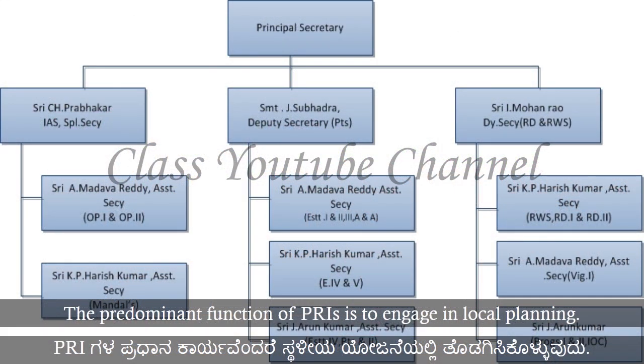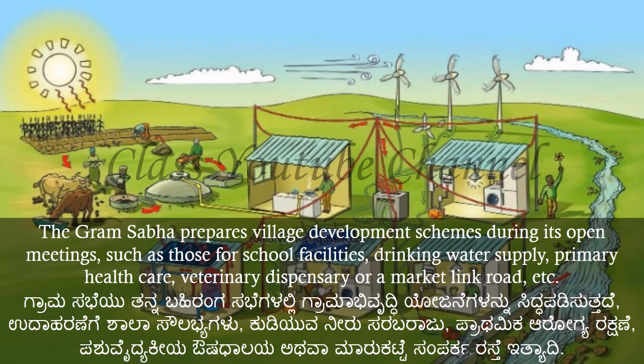The predominant function of PRIs is to engage in local planning. The Gram Sabha prepares village development schemes during its open meetings, such as those for school facilities, drinking water supply, primary health care, veterinary dispensary, or a market link road, etc.